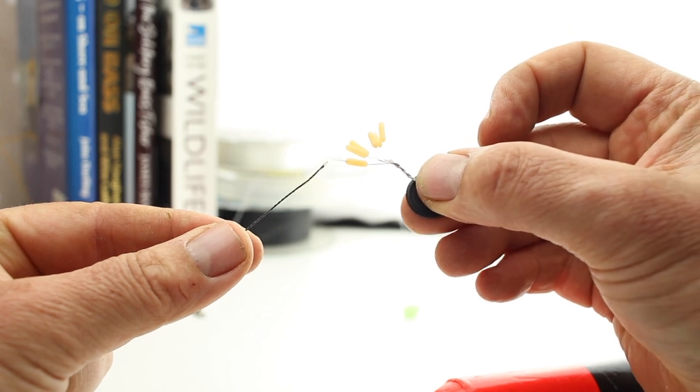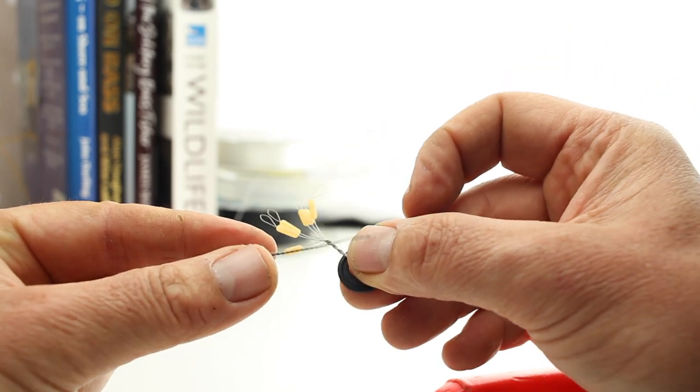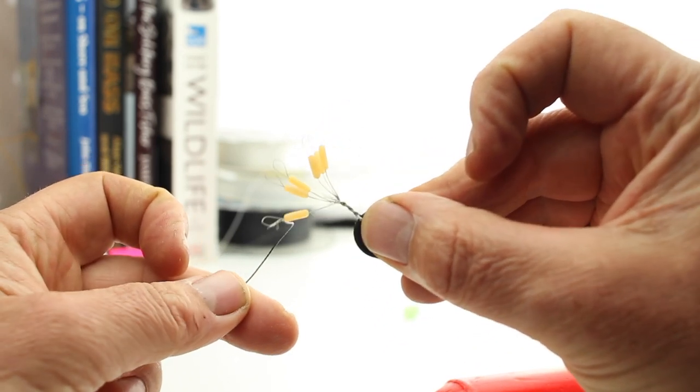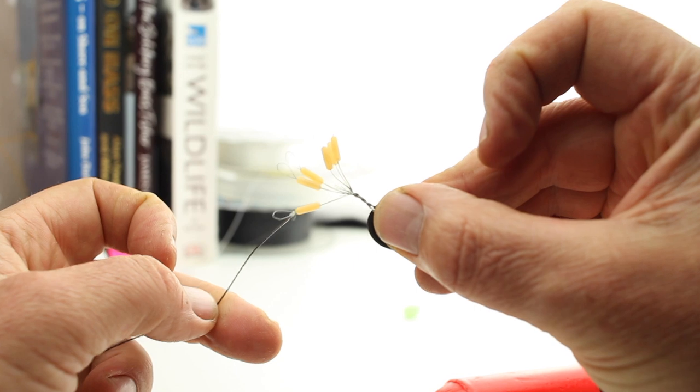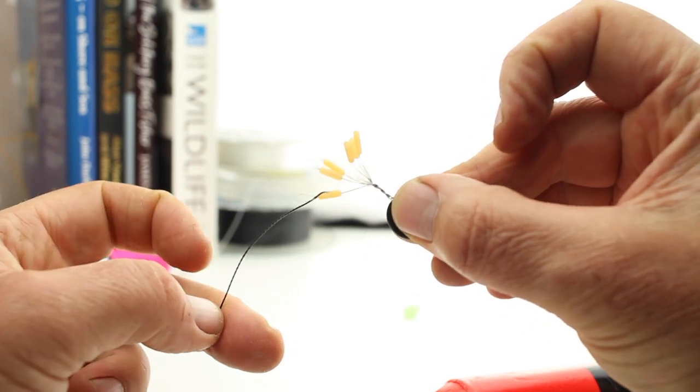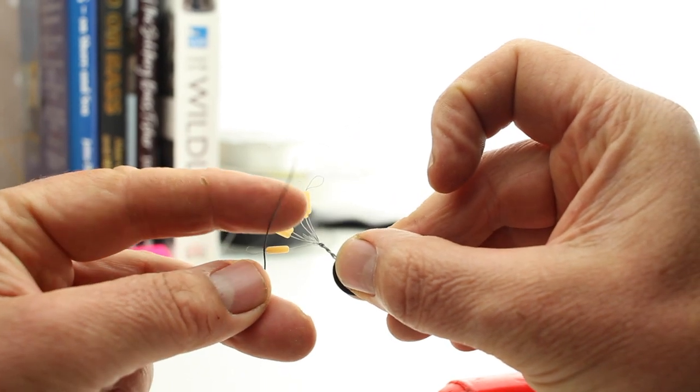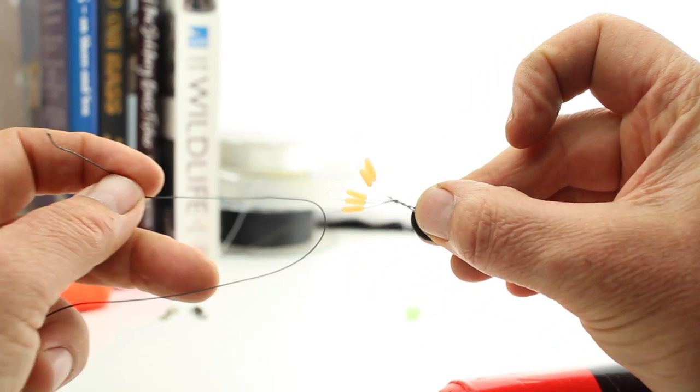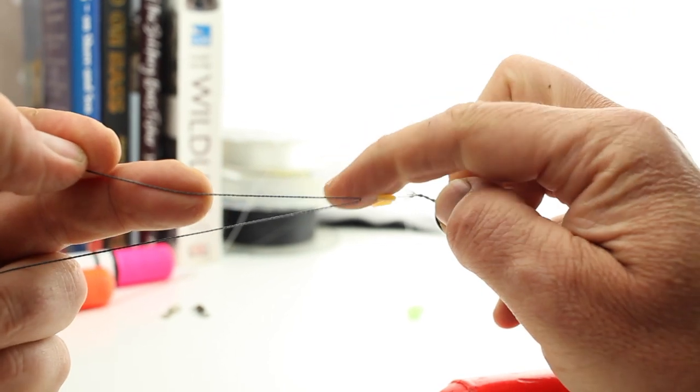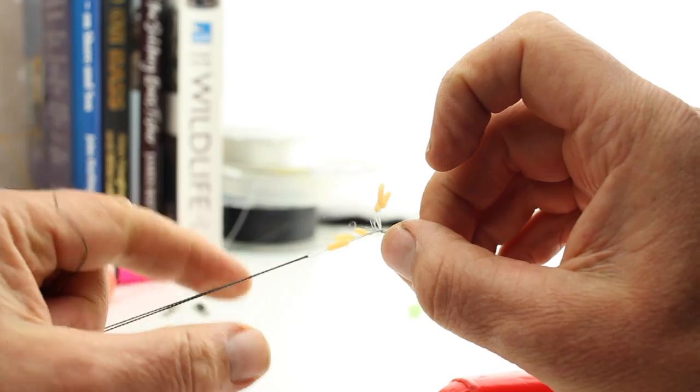Using braid for our main line here, but for float fishing you can use mono as well. Using that braid because it's just that little bit easier to see in that thick black color. Pull it through. You've got the two loops pulling against each other. It's easier to see with this black background.